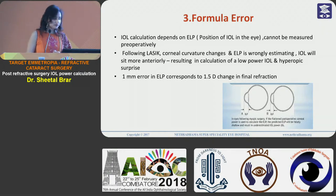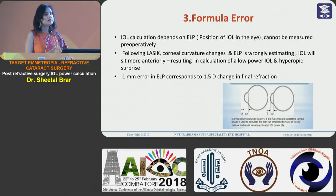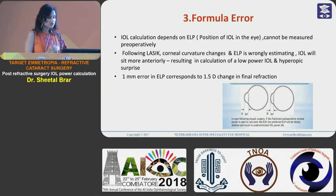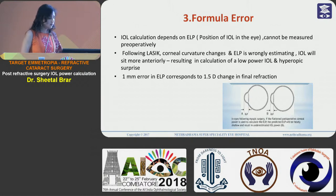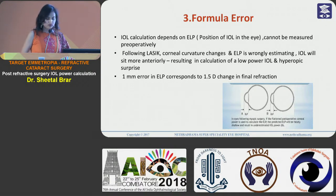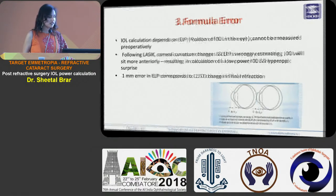Coming to the formula error: IOL power calculation depends on the effective lens position, which cannot be predicted accurately before cataract surgery. Following LASIK, as the curvature changes, the ELP can be wrongly estimated — as if the IOL is sitting more anteriorly — resulting in calculation of a lower IOL power and leading to a hyperopic surprise. It has been estimated that a one millimeter error in ELP corresponds to about 1.5 diopters of change in final refraction, which is very significant.